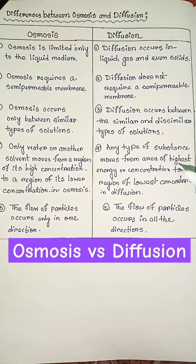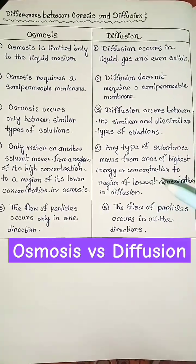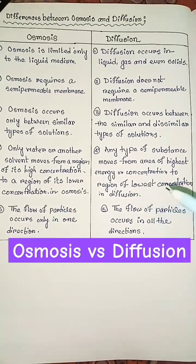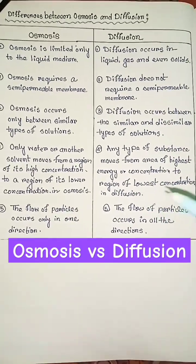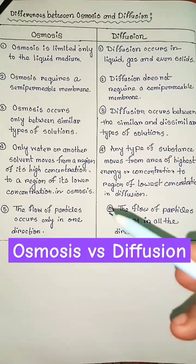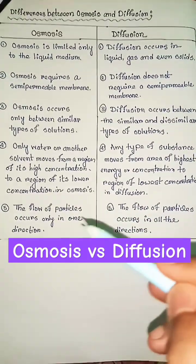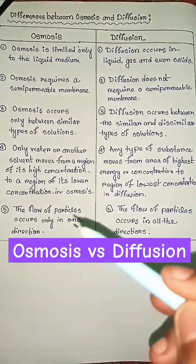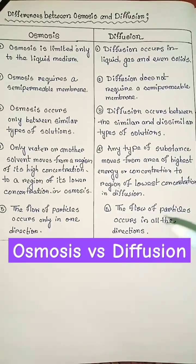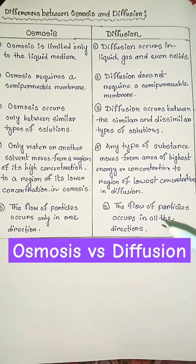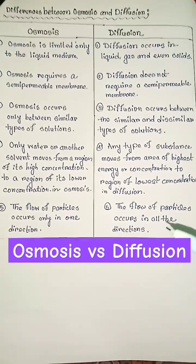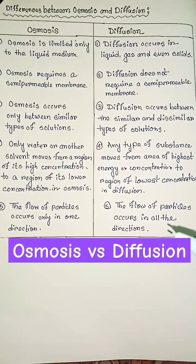But any type of substance moves from an area of highest energy or concentration to a region of lowest concentration in diffusion. The flow of particles occurs only in one direction in osmosis, but the flow of particles occurs in all directions in diffusion.